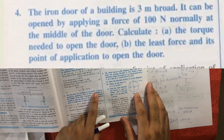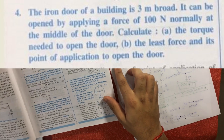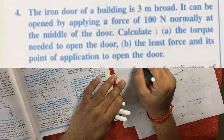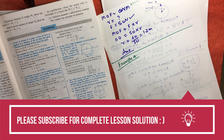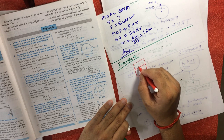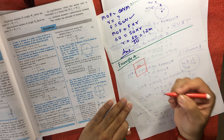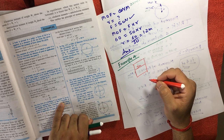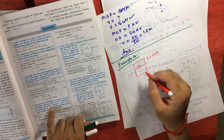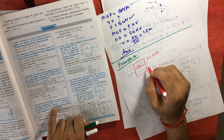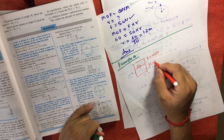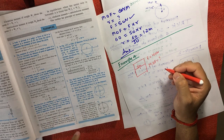The question says: the iron door of a building is three meters broad. The door can be opened by applying a force of 100 newton normally at the middle of the door. We need to calculate the torque — that is, the moment of force — needed to open the door.